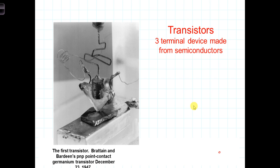In this video, we're going to give a brief overview of transistors and how transistors operate. A transistor is a three-terminal device made from semiconductors. This is a picture of the first transistor — at least the first documented transistor — which was made operational on December 23rd of 1947 at Bell Labs in New Jersey.